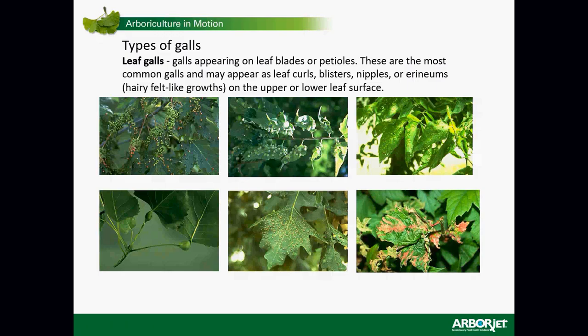Some of the different types of galls include leaf galls. These are probably some of the most common types of galls that you'll find. They result in leaf curls, blisters, nipples, or erroneums. These are just some examples of the different types. We frequently see these on maples, hackberry, oaks, and poplar.